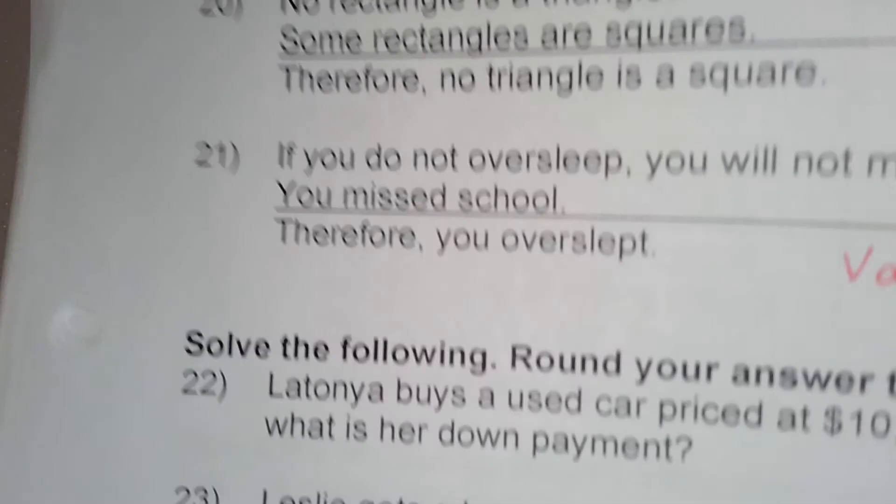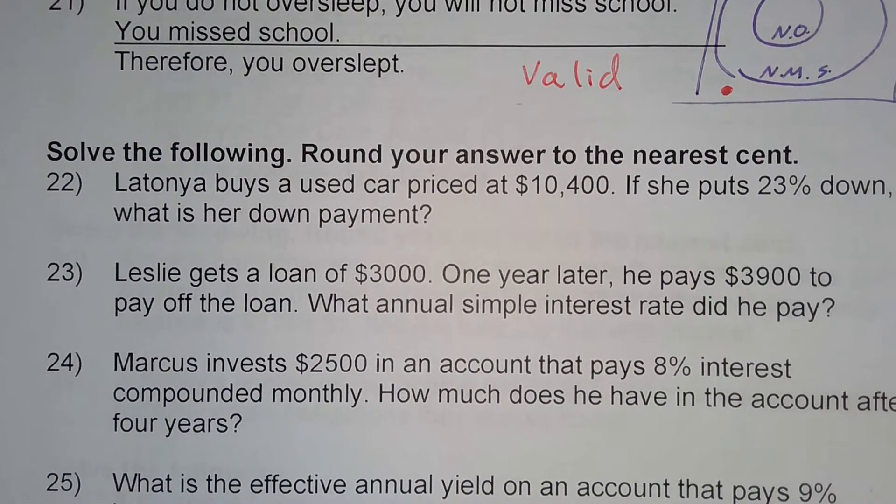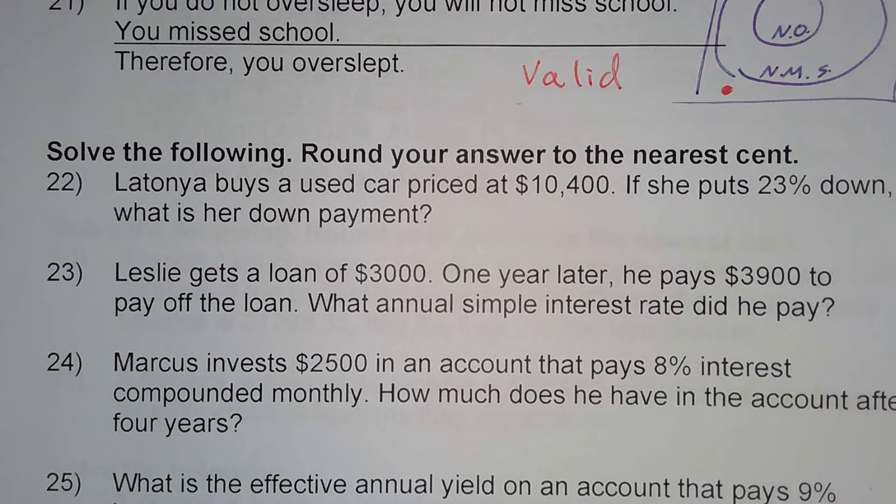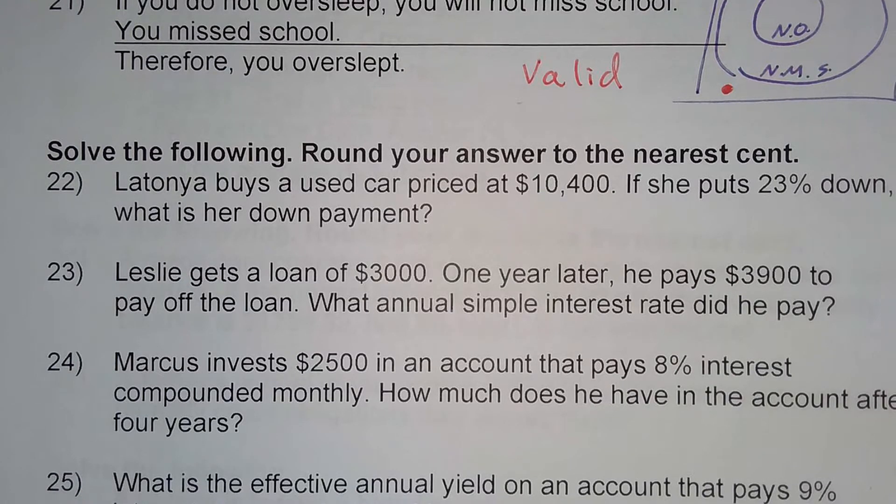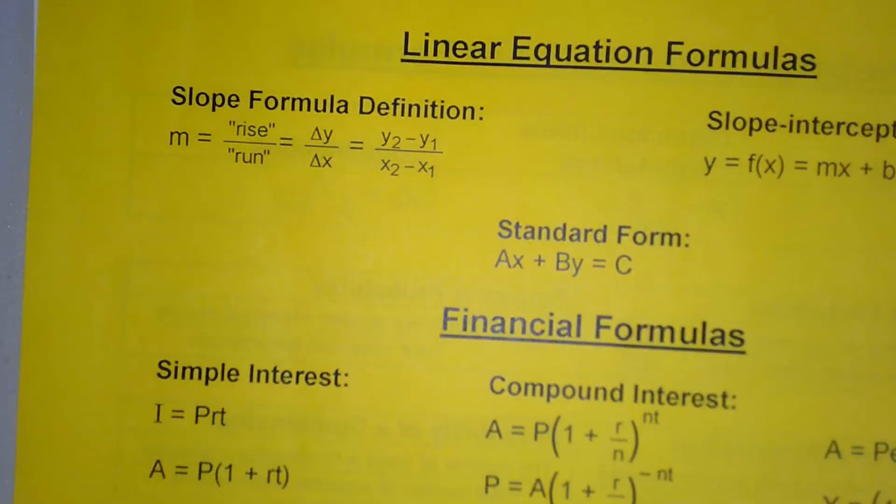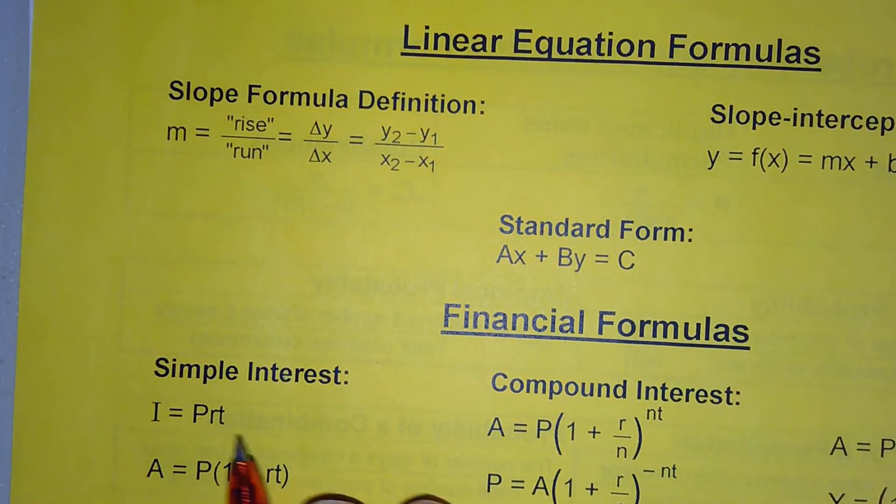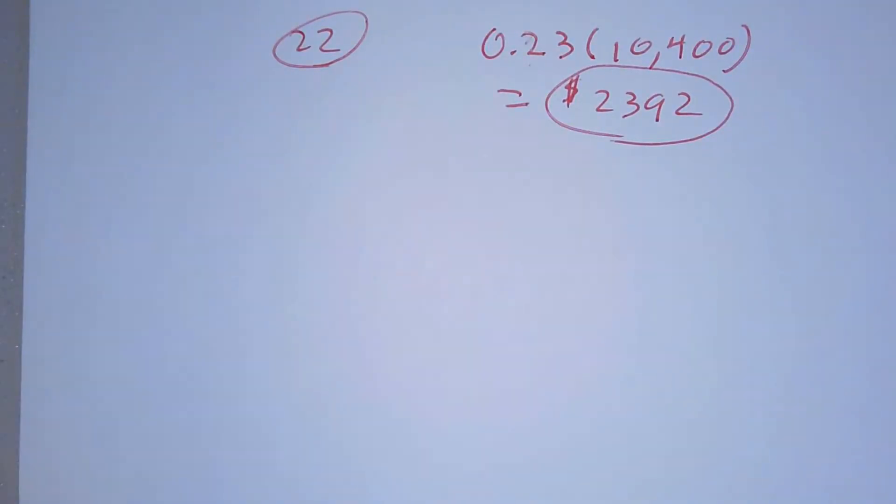Let's try number 23. Leslie gets a loan of $3,000. One year later, he pays back $3,900 to pay off the loan. What annual simple interest rate did he pay? All right, so we want to go ahead and take a look at our formula sheet. We want to notice on our formula sheet for simple interest, we have this formula here. This is the one we want to use.